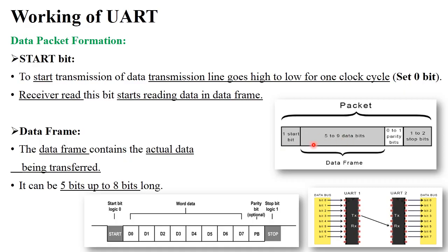Next is the data frame. There are five to nine data bits. The microcontroller sends information through the data bus to UART1, and this information is directly placed into the data frame. The data frame contains your actual data — you can carry either four bits or eight bits of data in this data frame.